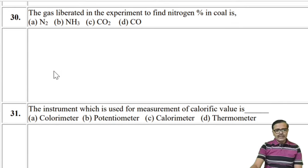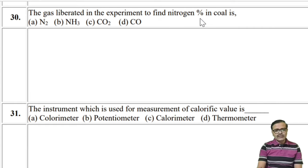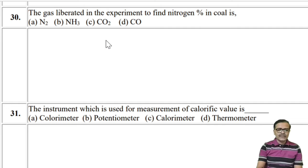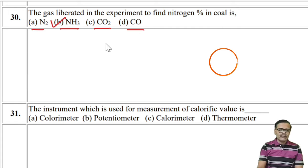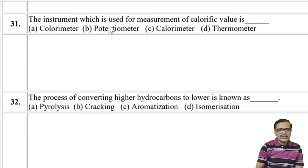The gas liberated in the experiment to find nitrogen percentage in coal is ammonia — not nitrogen itself, not CO2, not CO. Ammonia is formed. So the answer is ammonia.